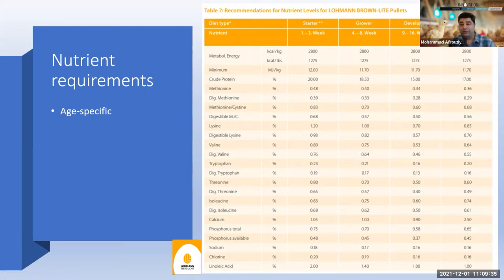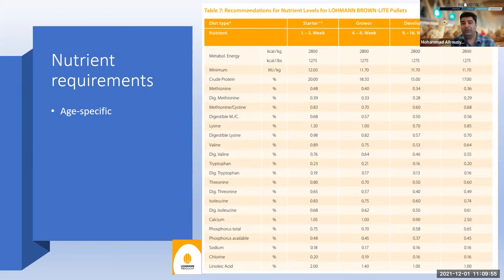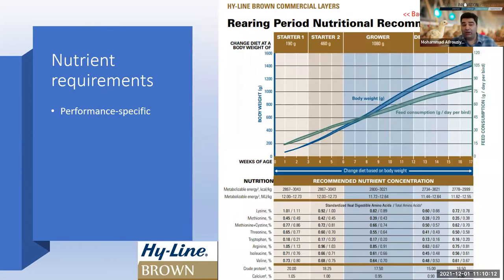But is it a good approach to define nutrient requirements based on age? I doubt it, because there is individual variation in your flock — different body weights and different body condition. We really need to evaluate our flock from the performance perspective and body condition perspective, and then define nutrient requirements.